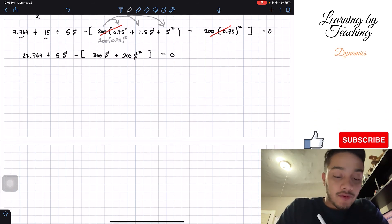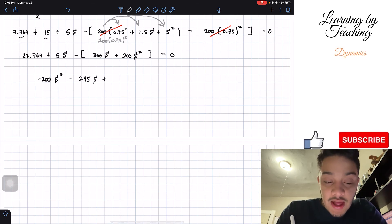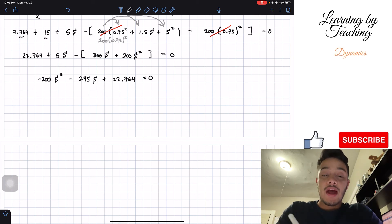Let's keep solving for it. We only have 200S squared but we have a negative of it, so we're going to have negative 200S squared. We have 5S minus 300S will give us negative 295S, and then last we're going to have plus 22.764 and all this should be equal to zero. So now what we have is a quadratic equation.